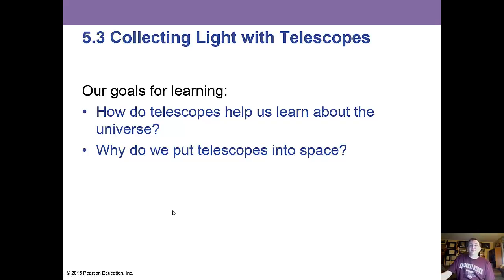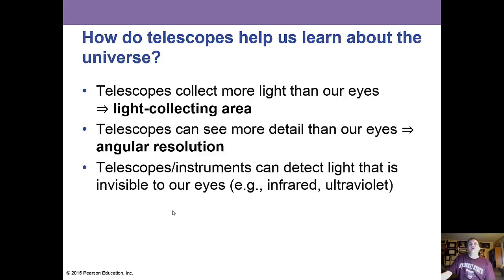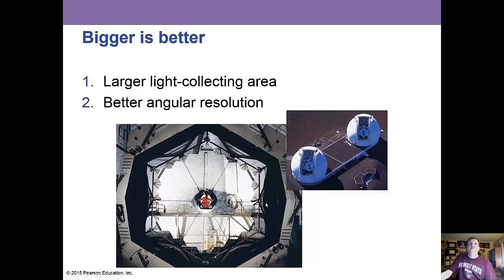Telescopes — why do we put telescopes in space and what can we learn from them? The two big things about telescopes: they collect more light than our eyes, which is the light-collecting area, and they can see more detail than our eyes, called angular resolution. Telescopes and instruments can also detect light invisible to our eyes, such as infrared and ultraviolet. The twin Keck telescopes in Hawaii are both ten meters across.